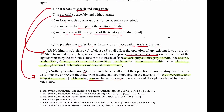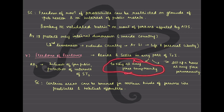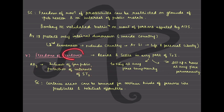Moving on to freedom of residence. You can reside and settle in any part of the territory of India. You can stay at any place temporarily - like going for college or a job for a few years even if your domicile is elsewhere. Or you can set up a home permanently at any other place, even buy property in another state - that is also allowed. But again, reasonable restrictions are there: interest of general public and protection of interest of scheduled tribes. The Supreme Court also said that certain areas can ban certain persons, like prostitutes and habitual offenders, from residing there.